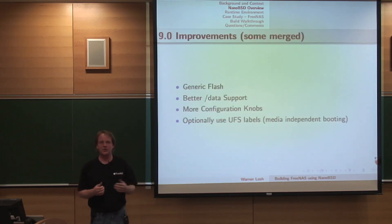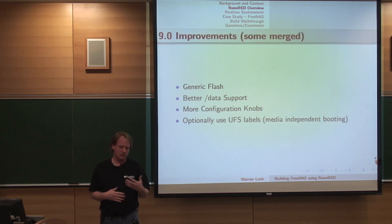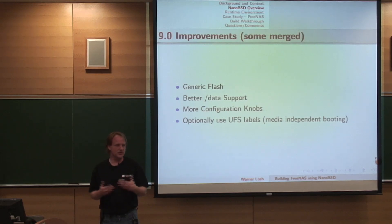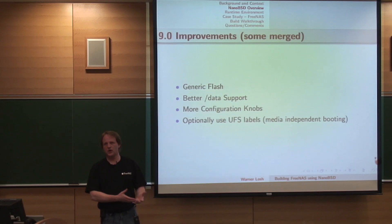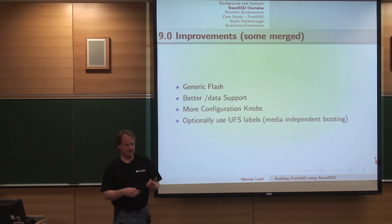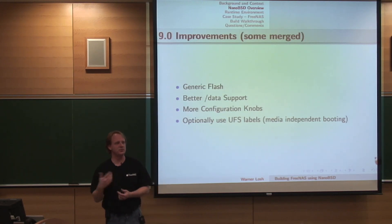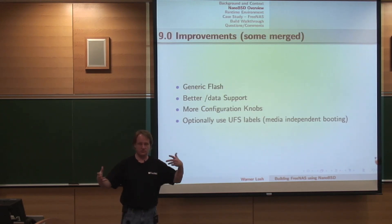In FreeBSD 9.0 we have a number of improvements coming into the tree for NanoBSD. One of the pitfalls with the current NanoBSD in 8.x and earlier was that there was no support for a generic image — you couldn't simply say 'I want a one gigabyte image.' NanoBSD grew up in the era where you had a specific compact flash with a very specific geometry that, if you didn't get exactly right, the boot loader wouldn't load FreeBSD off of.